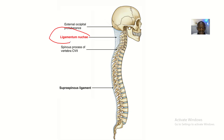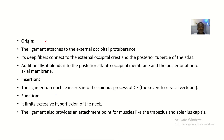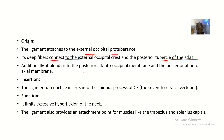The ligamentum nuchae originates from the external occipital protuberance and ends on the spinous process of the C7 vertebra. Regarding its minor origins, its deeper fibers connect to the external occipital crest and the posterior tubercle of the atlas, which is the first cervical vertebra.